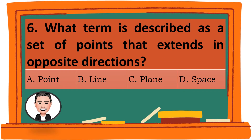Question 6. What term is described as a set of points that extends in opposite directions? A. Point. B. Line. C. Plane. D. Space. The correct answer is B. Line.